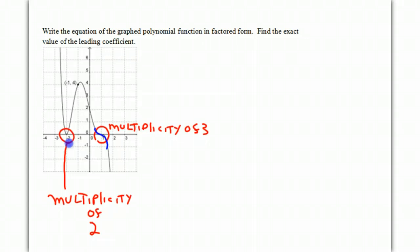And now we should be able to write our function. So let's start. y equals—we don't know what the leading coefficient is, so we'll put a. And now we know that there's a root at negative 2, so that gives us x plus 2. Since it's a multiplicity of 2, it's to the second power.